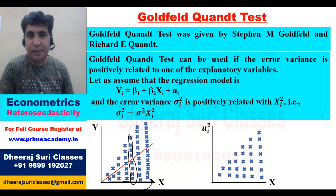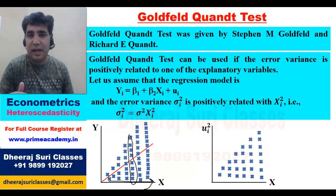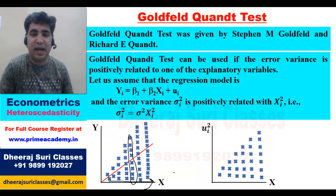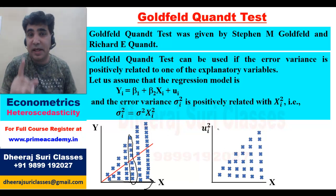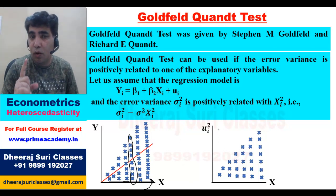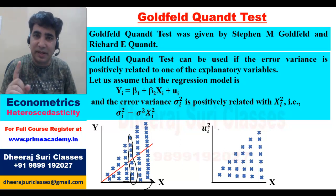In the second diagram, the error variance is rising as x is increasing. If x is increasing, the error variance is rising. This is an assumption. Based on this assumption, we can apply the Goldfeld-Quandt test.